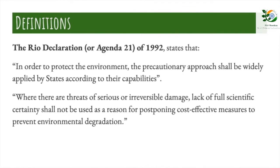There are two widely accepted definitions of the principle. The first was given in the Rio Declaration of 1992, which stated that in order to protect the environment, the precautionary approach shall be widely applied by states according to their capabilities. Concisely, where there are threats of serious or irreversible damage, lack of full scientific certainty shall not be used as a reason for postponing cost-effective measures to prevent environmental degradation.